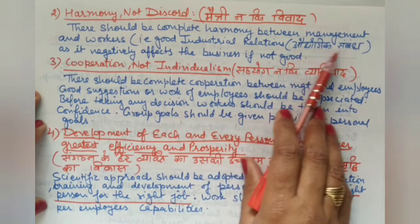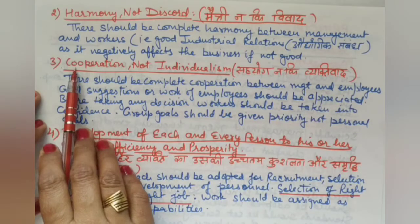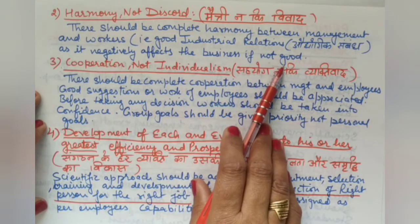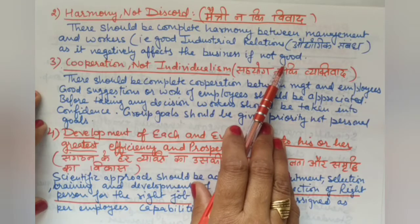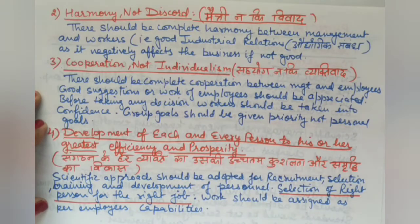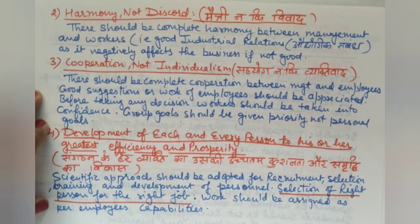Good industrial relations are essential. Discord between management and workers will negatively affect business. If they are constantly in conflict, it will stop the business from functioning. Without coordination, the objectives of the business cannot be achieved. They must respect one another and understand each other's problems.